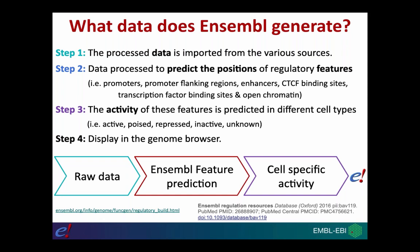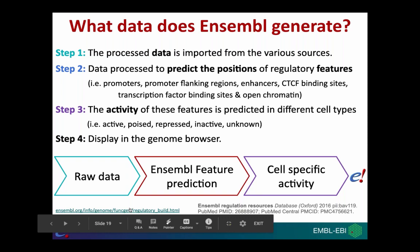Step three is to look at the activity of these features in a number of different cell types. Across the different cell types we have data for, we predict whether these regulatory features are active, inactive, poised, or repressed — giving an activity state for each feature in each cell type based on the underlying evidence. Finally, step four is to display all this data in the genome browser. Documentation links and a publication explaining the Ensembl regulatory build in more detail are provided.